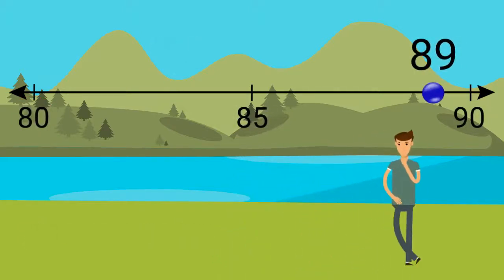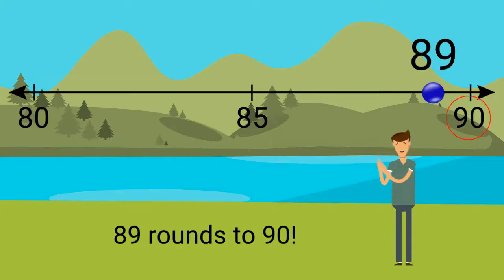What is 89 rounded to the nearest 10? 89 rounded to the nearest 10 is 90. It is closer to 90 than 80.